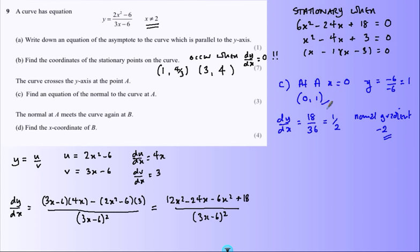So I've got a point, I've got a gradient, which means my normal is simply y minus y1 equals m times x minus x1. Slot my numbers in: point gradient, x minus 0. And so y equals - that's my normal there.